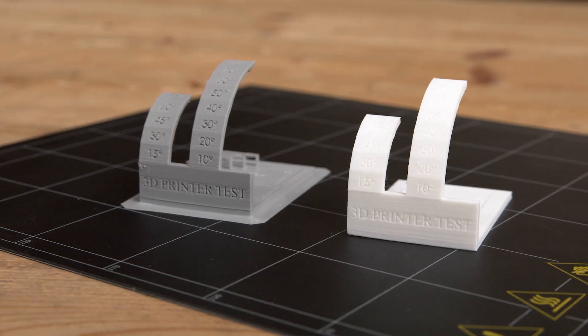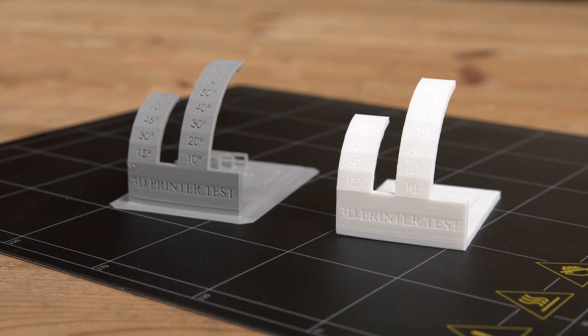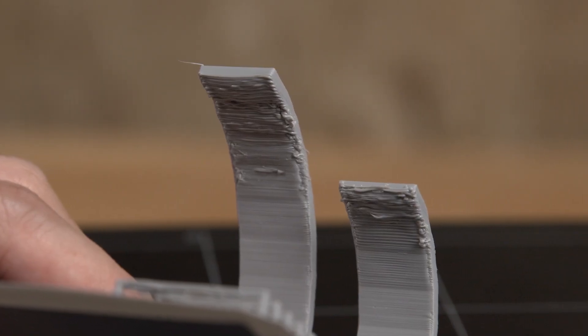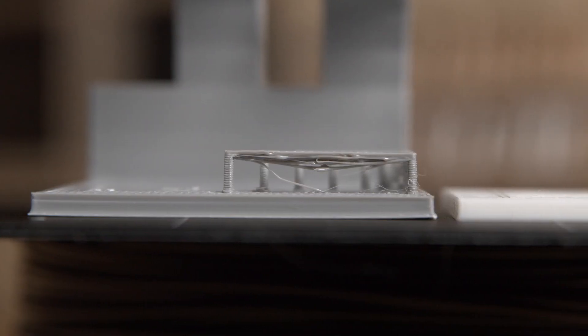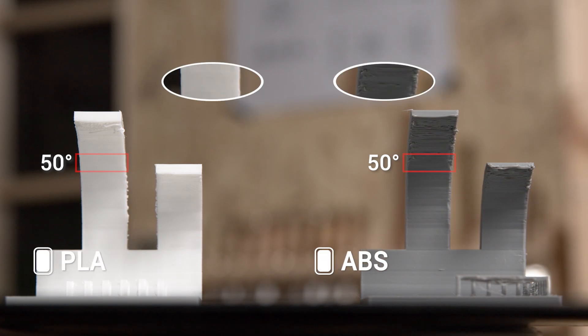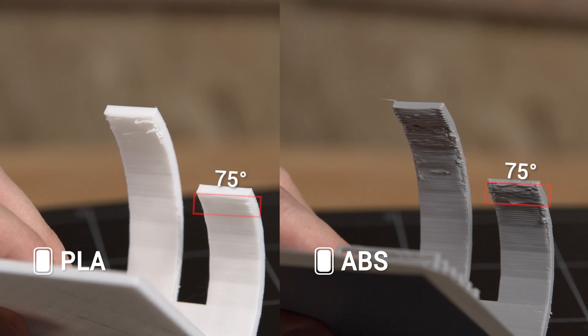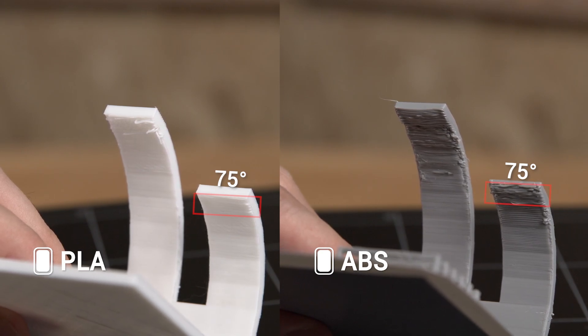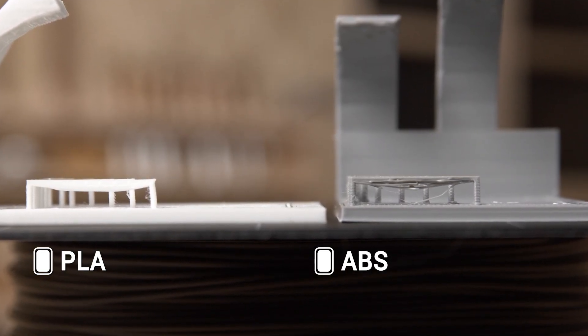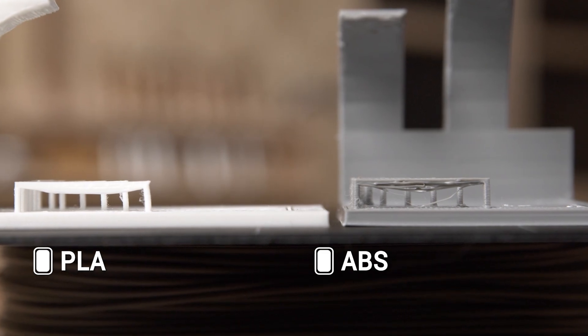The other problem with ABS printing is its tolerance to vertical overhang and bridging structure. ABS is more likely to curl and sag as the overhang angle or bridge length increases. At 50 degrees, PLA looks alright, while ABS have some flaws at the edge. When it reaches 75 degrees, both of them have obvious saggings, but PLA is apparently better. And at the same length, ABS bridges have more saggings or breaking-offs than PLA.